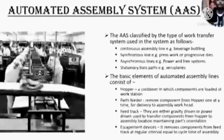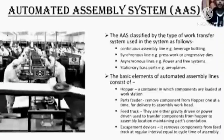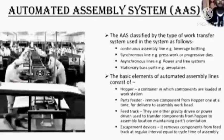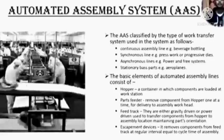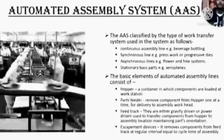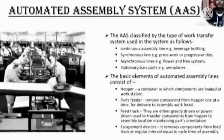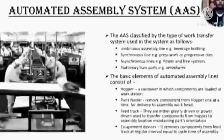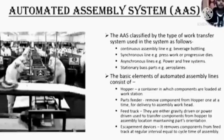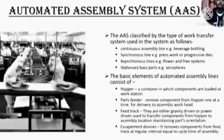The basic elements of automated assembly lines consist of: a hopper — a container in which components are located at the workstation; it gives regular vibration to bring parts to a basic position. Part feeder — it removes components from the hopper one at a time for delivery to the assembly workhead. Feed track — either gravity driven or power driven, used to transfer components from hopper to assembly locations while maintaining parts orientation. Escapement devices — remove components from the feed track at regular intervals per cycle time of assembly.